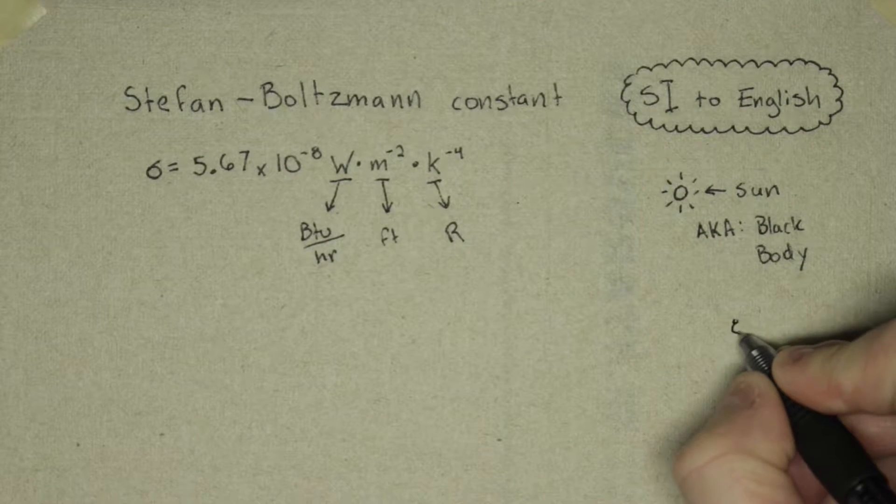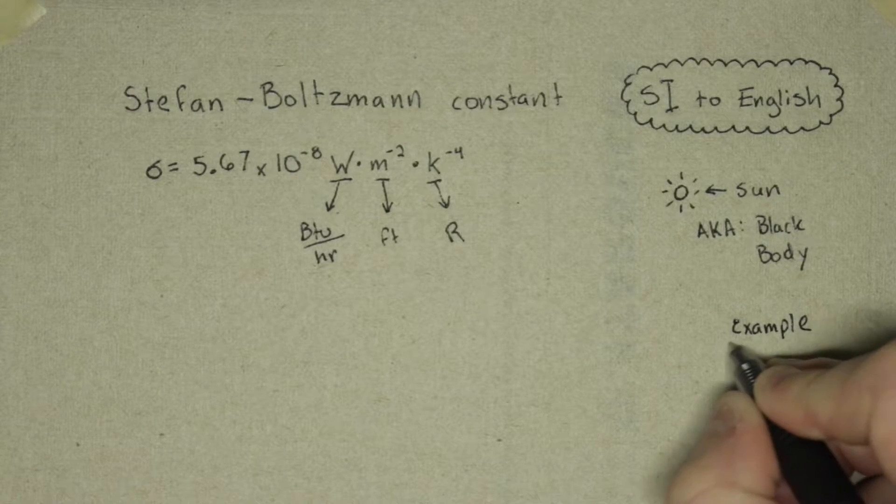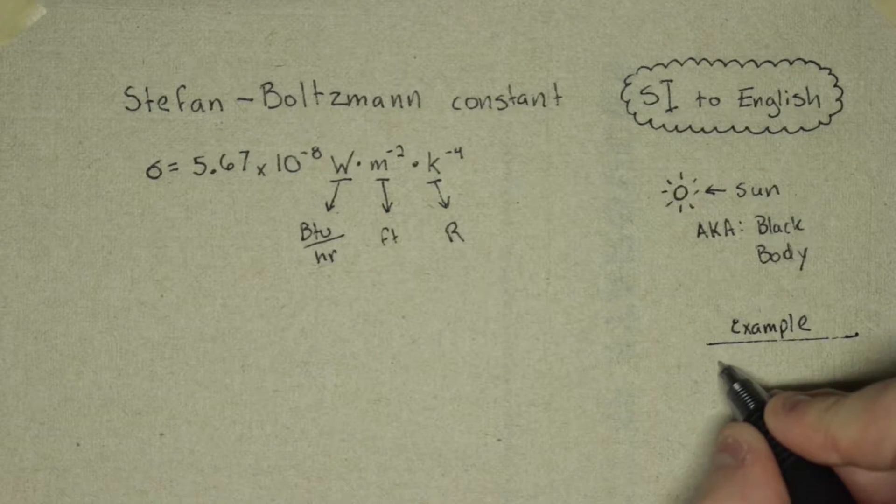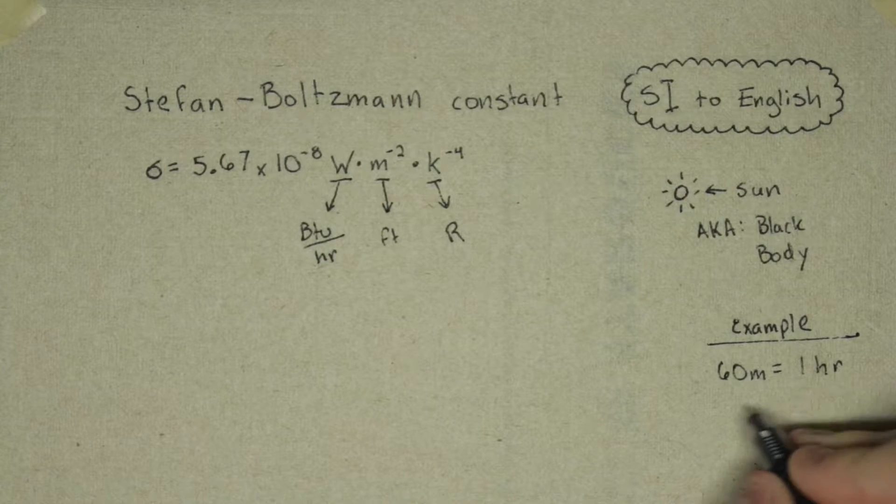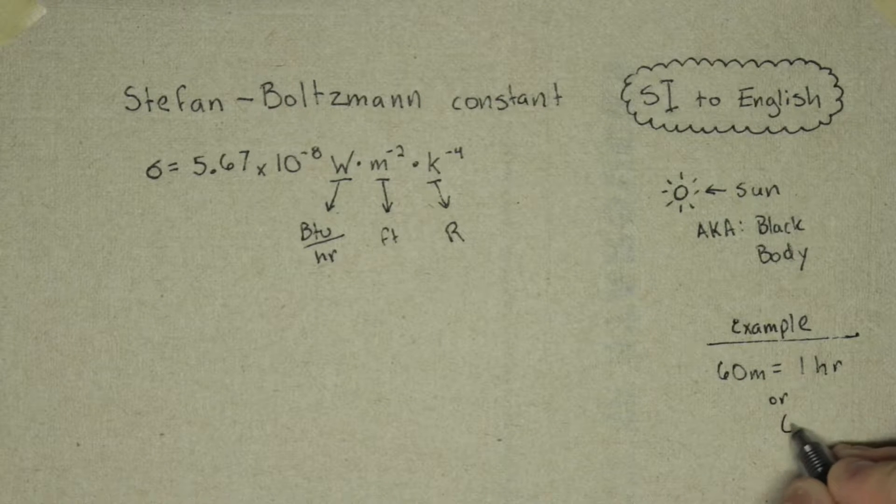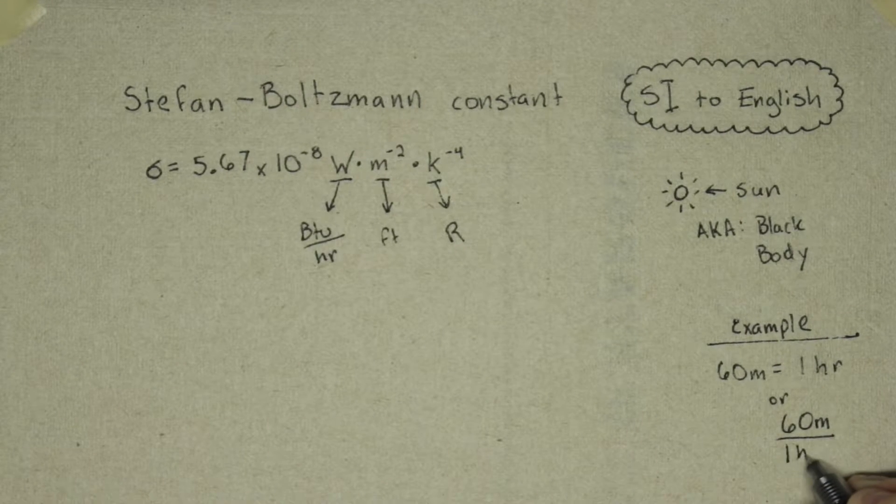The idea behind changing units is to multiply it by a fraction that reduces to 1 using the units you want to get to. Because anything multiplied by 1 is still itself. That concept is a little hard to grasp, but after you've done it a few times, it makes a lot of sense.